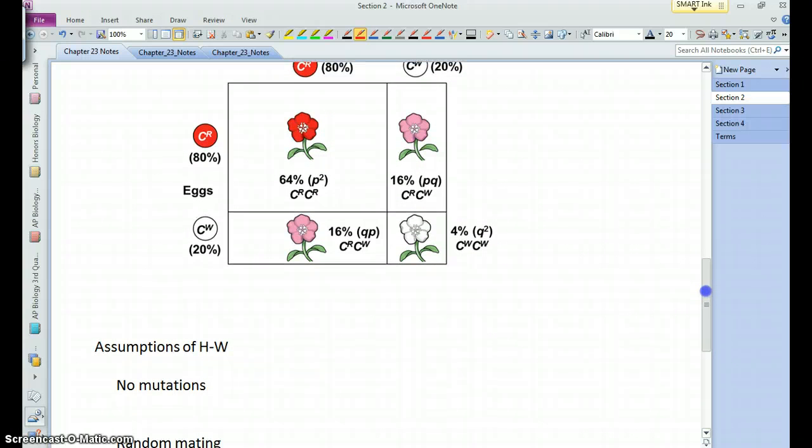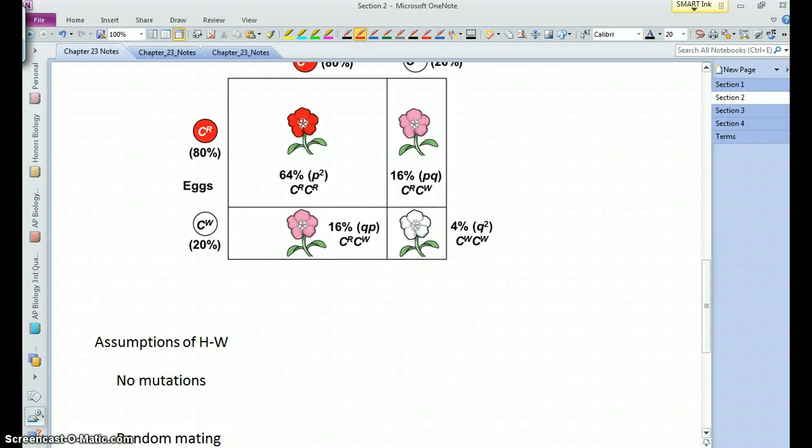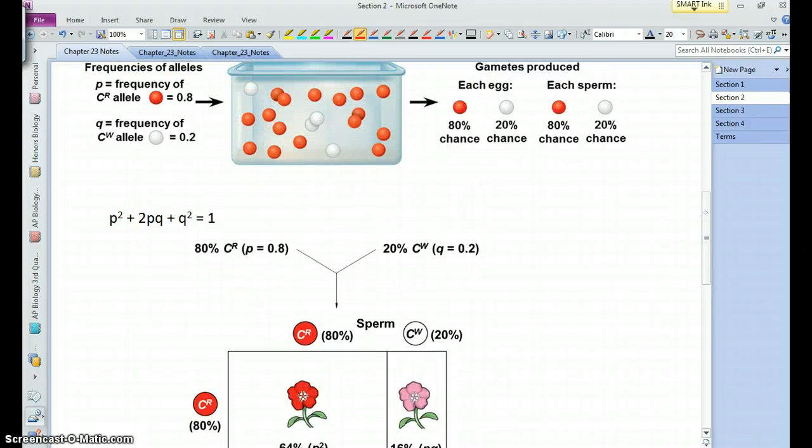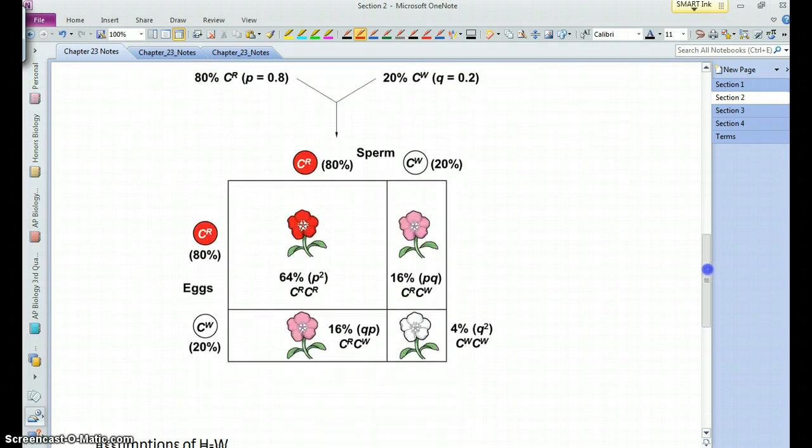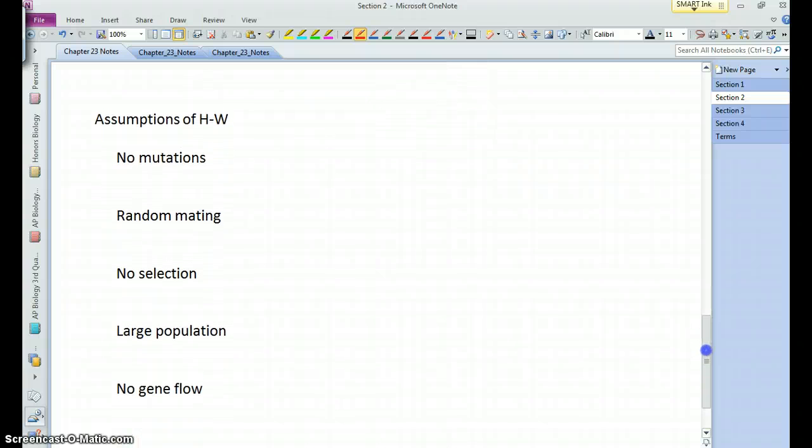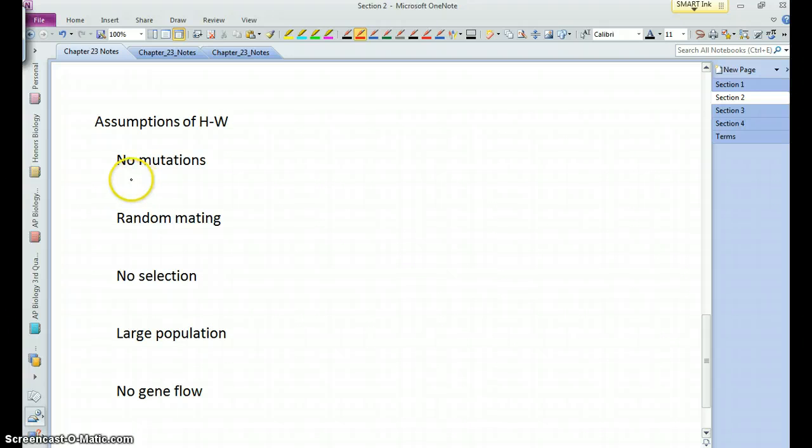Okay. So, again, with Hardy-Weinberg, if you know the allele frequencies, you can calculate genotype frequencies. Now, this will work. That is, the allele frequencies will allow you to accurately calculate the genotype frequencies when certain assumptions are met. And that is that there is no mutation occurring in that population.